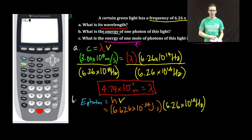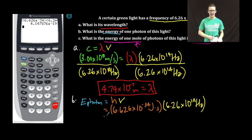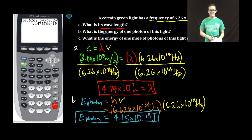Calculator time, 6.26, second E, negative 34, close parentheses, new parentheses, 6.26, second E, 14, close parentheses, enter. My energy per photon to three significant figures, 4.15 times 10 to the negative 19 joules. Boom. Okay, that's easy enough.